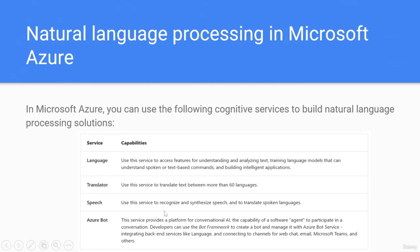We have the translator service to translate text between more than 60 languages. The speech service is used to recognize and synthesize speech and to translate spoken languages. Azure Bot provides a platform for conversational AI — the capability of a software agent to participate in a conversation. Developers can use the Bot Framework to create a bot and manage it with Azure Bot Service, integrating back-end services like language and connecting to channels for web chat, email, and Microsoft Teams.